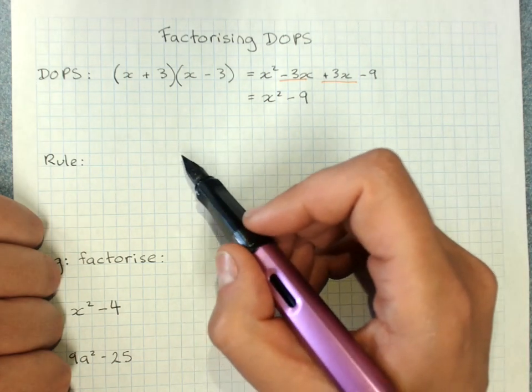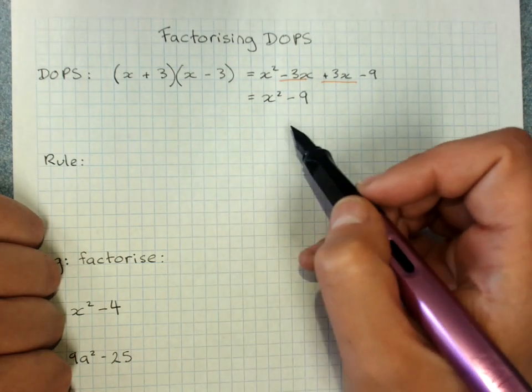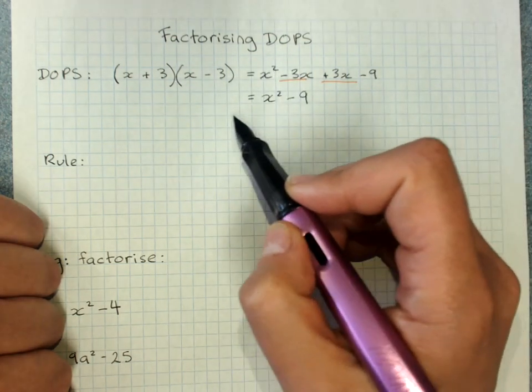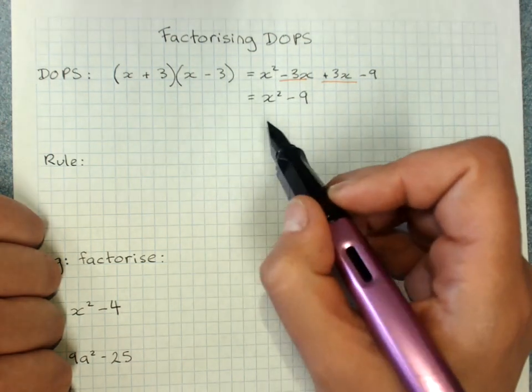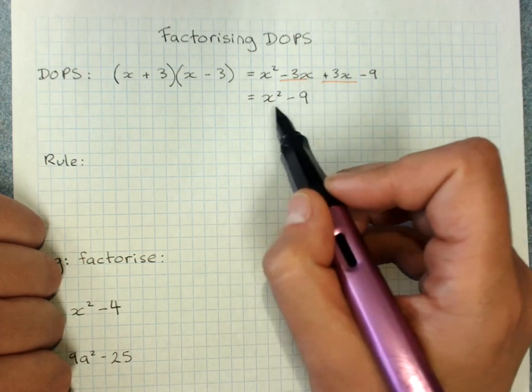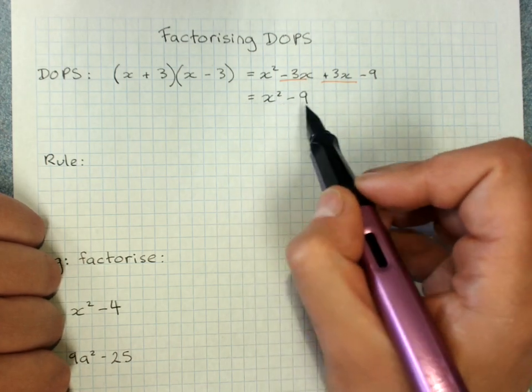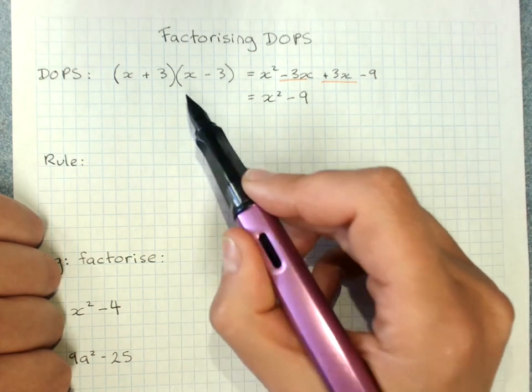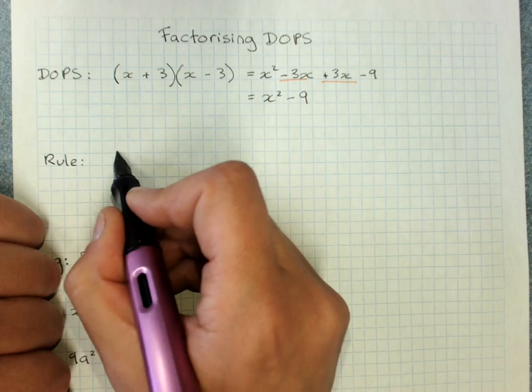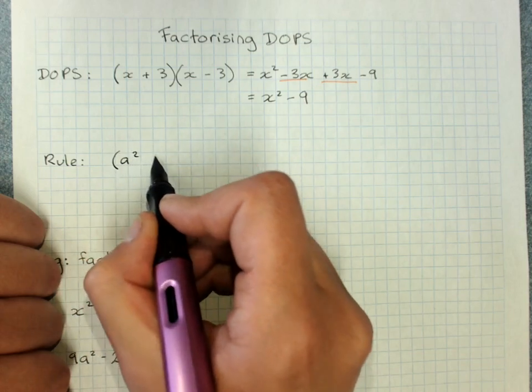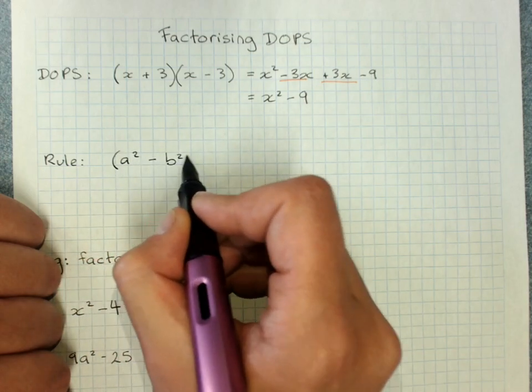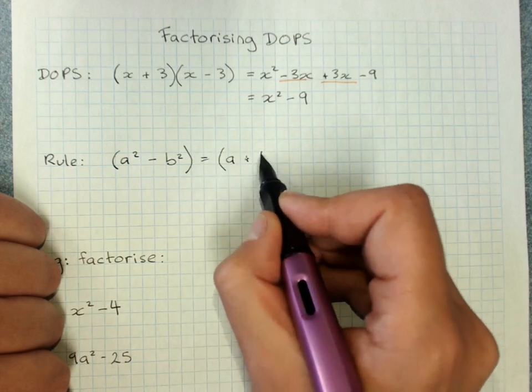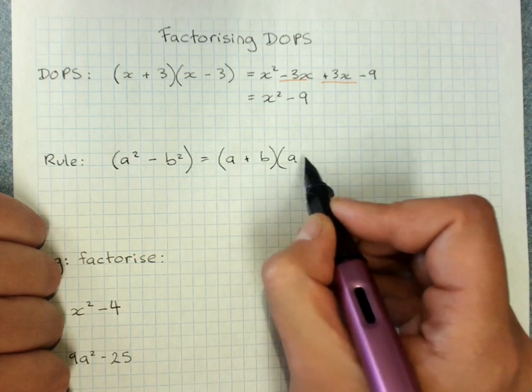The rule is of course then that when we factorize this, so here we expand it, to factorize we go back to the brackets. We actually just have to recognize when we see two squares and a negative minus that we'll have to factorize it back to this. So our rule is a squared minus b squared factorizes to a plus b, a minus b.